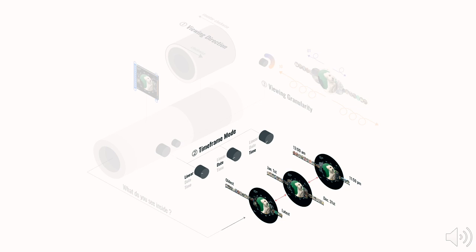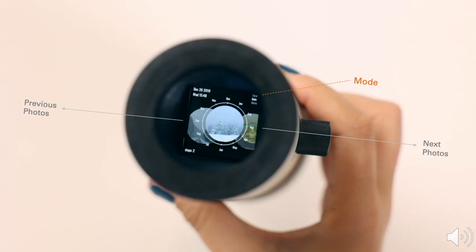The second control is the bigger knob on the side of the scope. It lets the user toggle between three timeframe modes: linear, date, and time. Each mode organizes the photos differently. The linear mode sorts photos in chronological order. The date mode retrieves all photos taken on the same month and day, regardless of the year — for example, all photos taken on January 1st throughout the years. The time mode selects all photos taken within a specific hour, such as 5pm, regardless of the date and year. The selected mode is indicated on the top right of the interface.